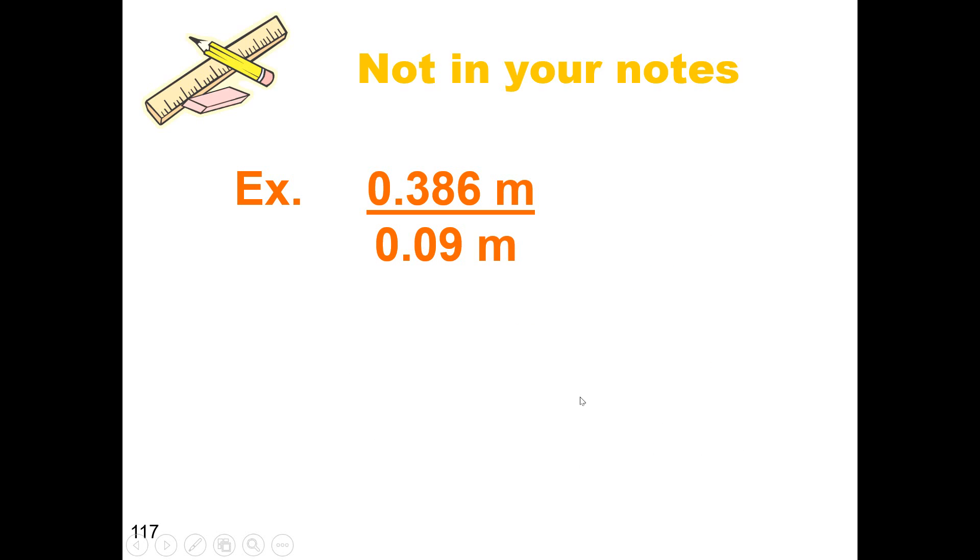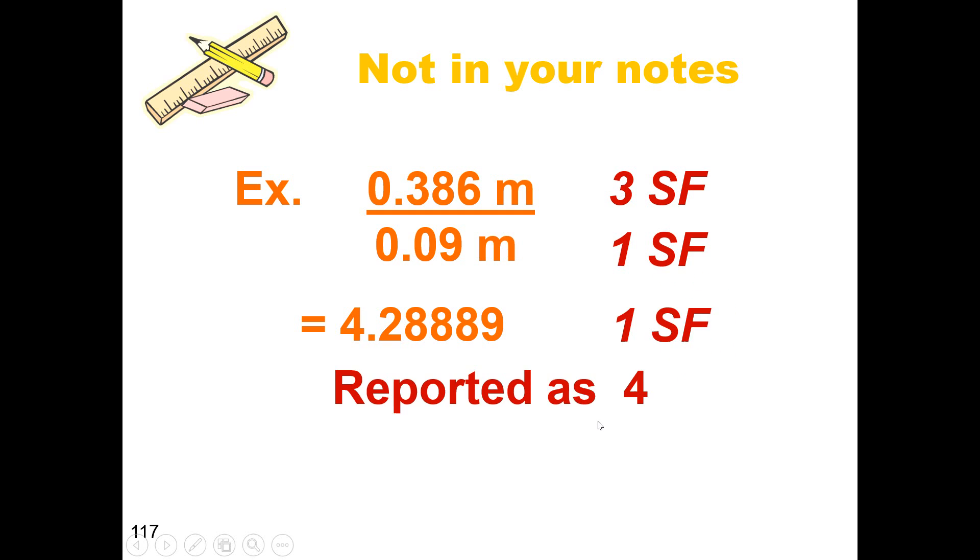Let me give you a quick division problem. Type this into a calculator, recognize this is three sig figs, this is one sig fig. So our answer should be just one sig fig. When you divide meters divided by meters, they cancel each other out. So this actually has no unit to it. Notice I'm rushing because my computer is about to die. So reported as one, just four, one sig fig.